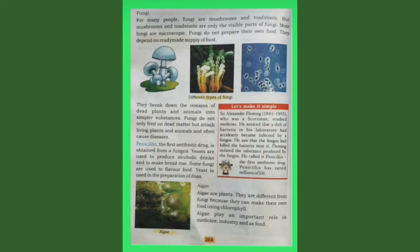Sir Alexander Fleming, born 1881 to 1955, was a Scotsman who studied medicine. He noticed that a dish of bacteria in his laboratory had accidentally become infected by a fungus. He saw that the fungus had killed the bacteria near it. Fleming isolated the substance produced by the fungus and called it penicillin — the first antibiotic drug, which has saved millions of lives.